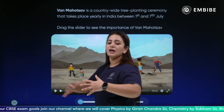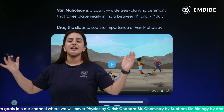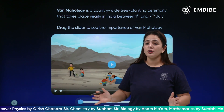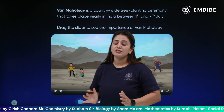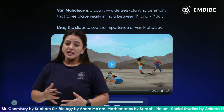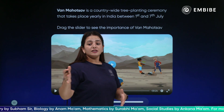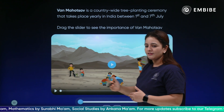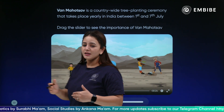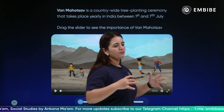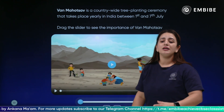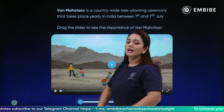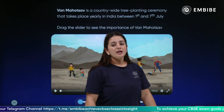Van Mahotsav is a countrywide tree planting ceremony celebrated everywhere. It takes place from the first to the seventh of July — these seven days are the time period in which we celebrate Van Mahotsav by planting more and more trees in our surroundings and nearby areas.